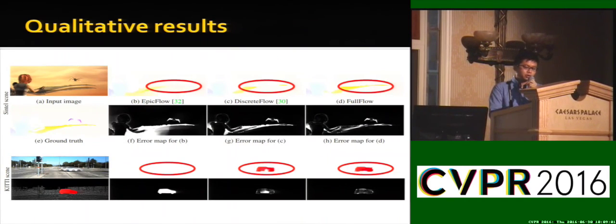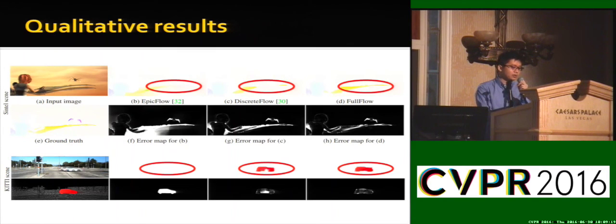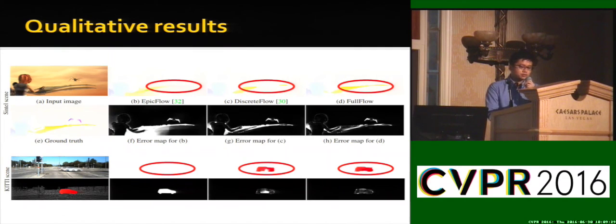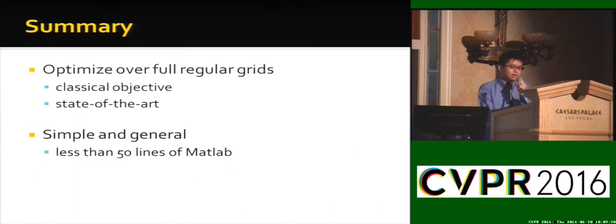For results compared to EpicFlow, our approach performs well on regions with large displacement. In summary, we have shown that globally optimizing over regular grids is sufficient to obtain state-of-the-art performance, which can be achieved without a separate matching module.